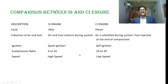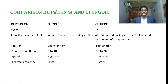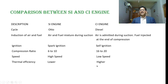Spark ignition engines are usually high speed engines, whereas compression ignition engines are comparatively low speed engines. The thermal efficiency of the Otto cycle is lower compared to that of the Diesel cycle.